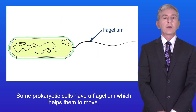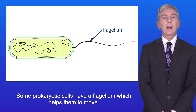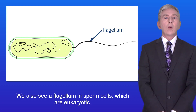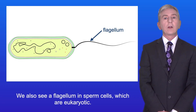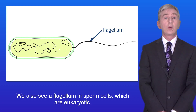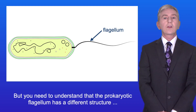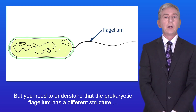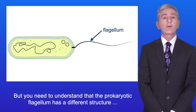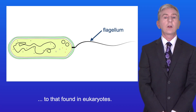Some prokaryotic cells have a flagellum, which helps them to move. We also see a flagellum in sperm cells, which are eukaryotic. But you need to understand that the prokaryotic flagellum has a different structure to that found in eukaryotes.